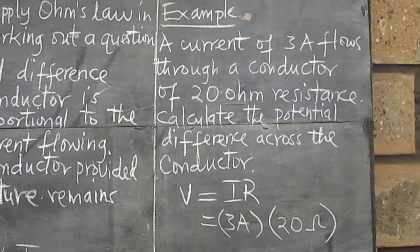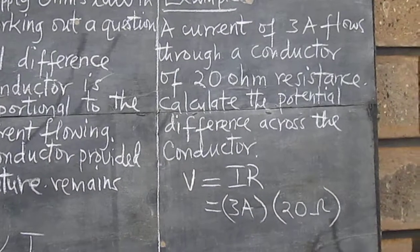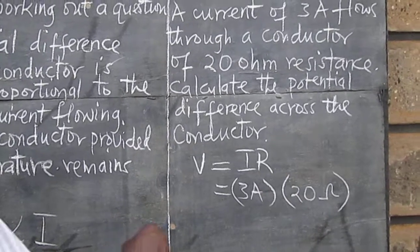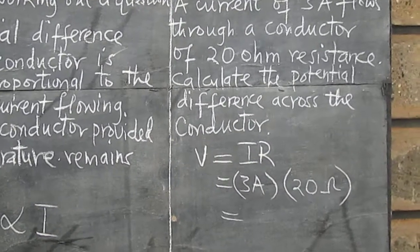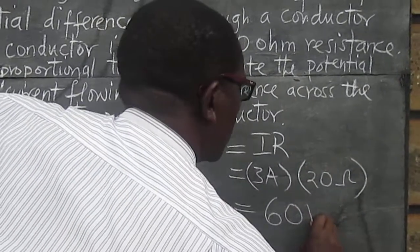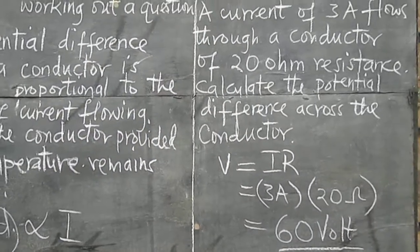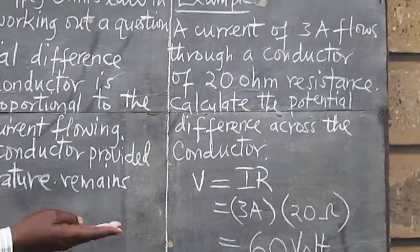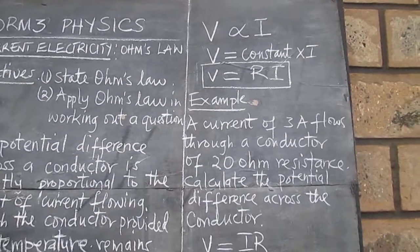Instead of writing the whole word ohm, I've used the symbol — the Greek letter omega — to represent the ohm. The product gives us the potential difference across the conductor, and this is going to be 60 volts. So the potential difference, as you have seen in the answer, is measured in volts.